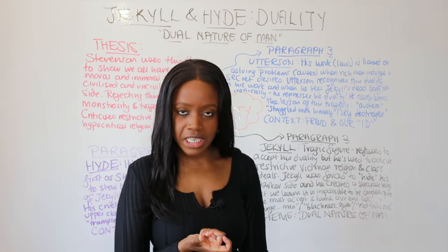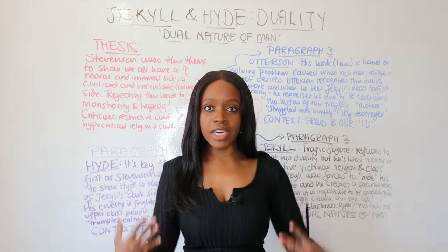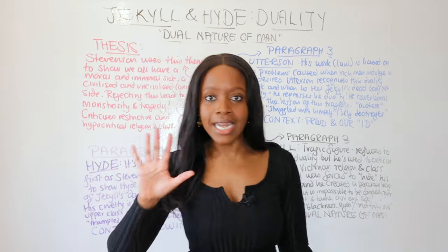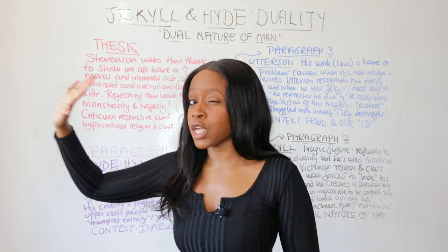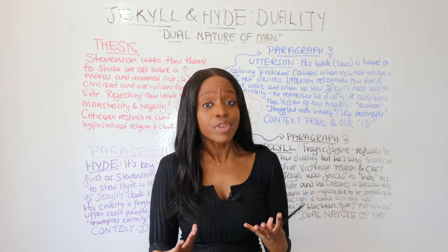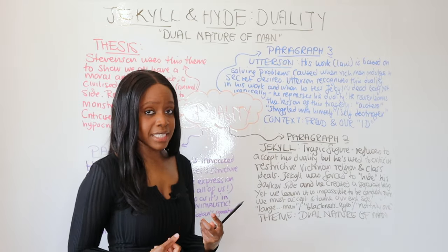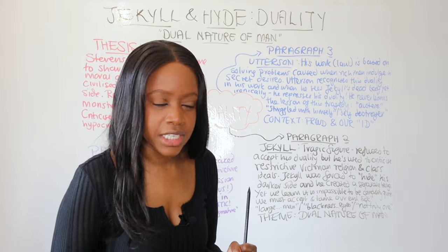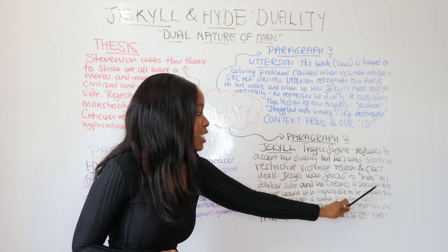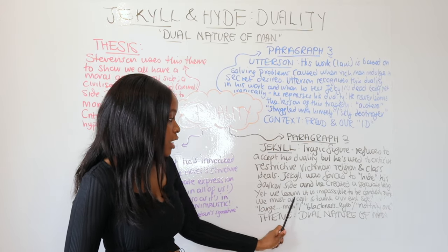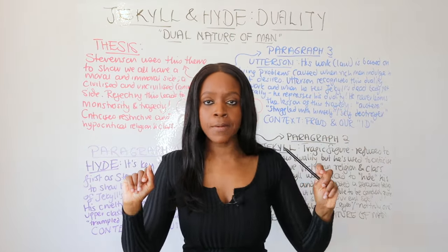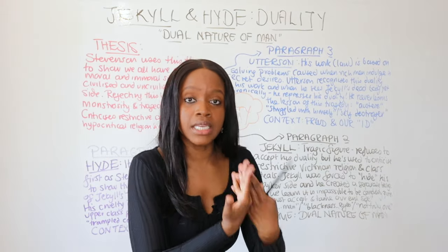Stevenson also criticized restrictive class ideals. The Victorian gentleman had to be very upstanding, dress in a certain way, and could only associate with other rich Victorian gentlemen - never with working-class people or working-class districts. Through the sympathetic character of Dr Jekyll, Stevenson criticizes this. As a result of these restrictive ideals, Jekyll was forced to hide his darker side, and so he created a separate being. But Stevenson teaches us that it's impossible to be completely pure.